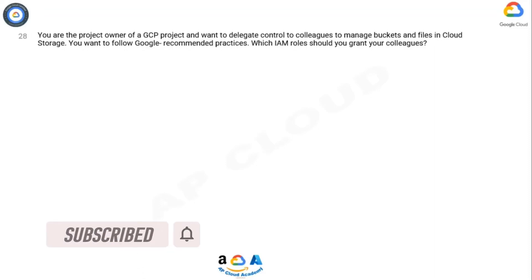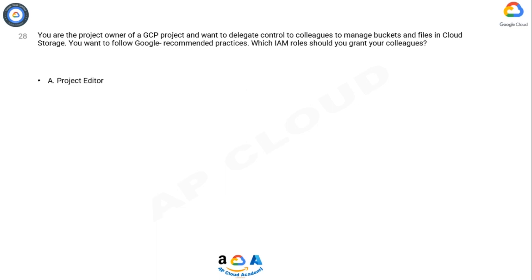Question. You are the project owner of a GCP project and want to delegate control to colleagues to manage buckets and files in Cloud Storage. You want to follow Google recommended practices. Which IAM roles should you grant your colleagues? Option A: Project Editor. Option B: Storage Admin. Option C: Storage Object Admin. Option D: Storage Object Creator.